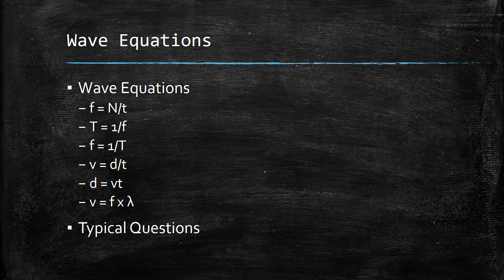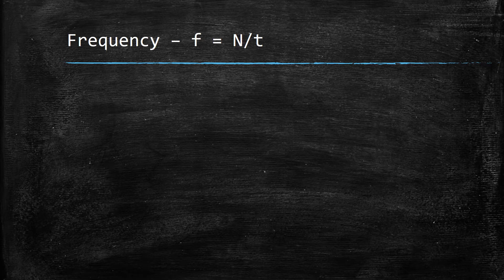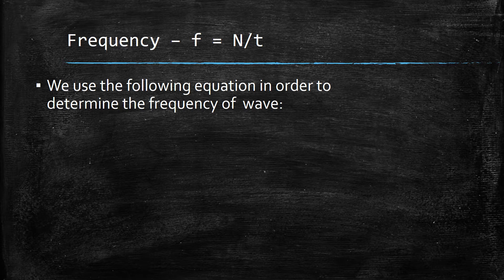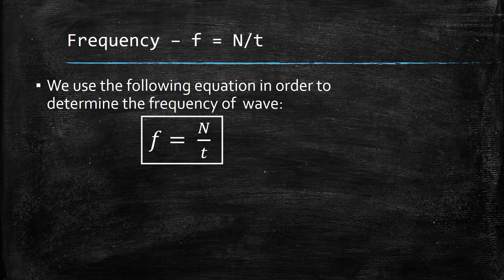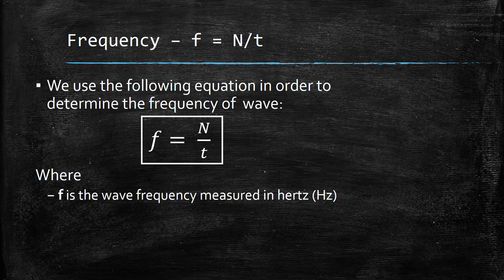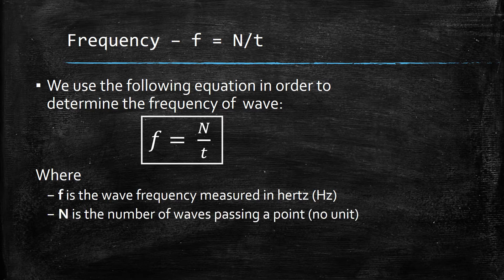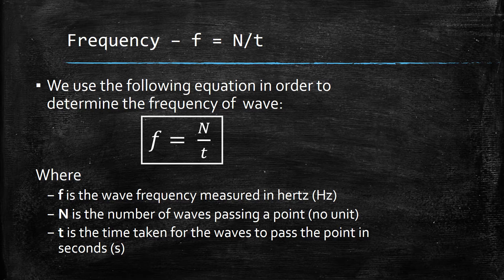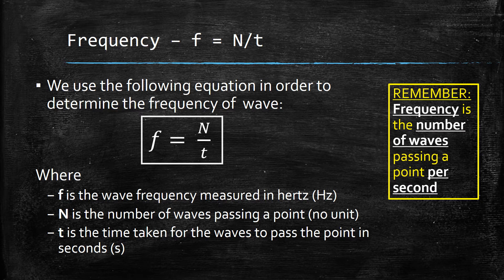We'll then be looking at some typical questions. Frequency: F is equal to N over T. We'll use the following equation in order to determine the frequency of a wave. This equation appears on the relationship sheet, so we put it into a box. Within this equation, F is the wave frequency measured in Hertz, N is the number of waves passing a point with no unit, and T is the time taken for the waves to pass the point in seconds. Remember, frequency is the number of waves passing a point per second, and this is where we get this definition from.